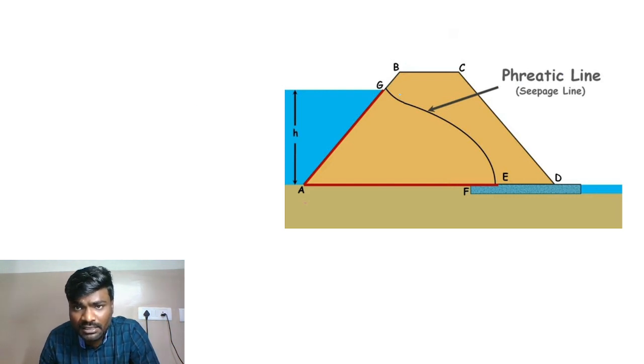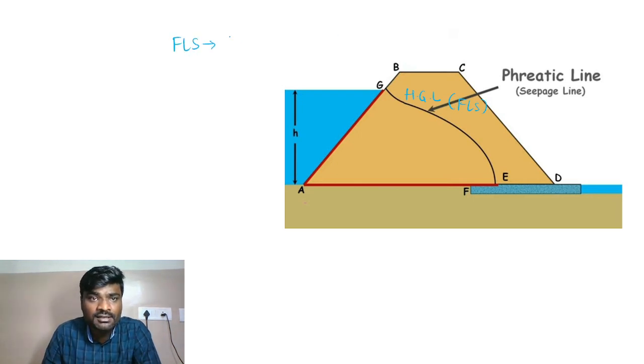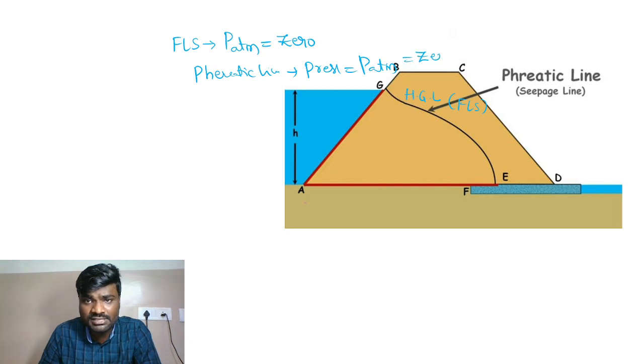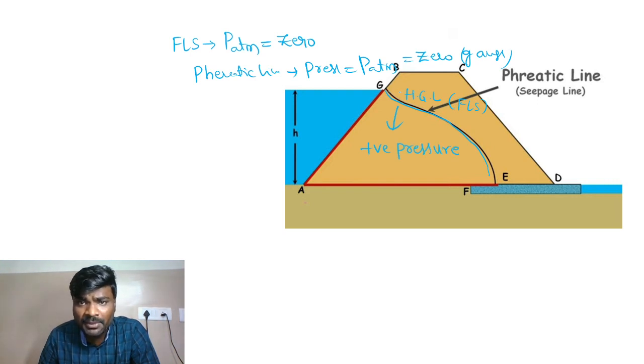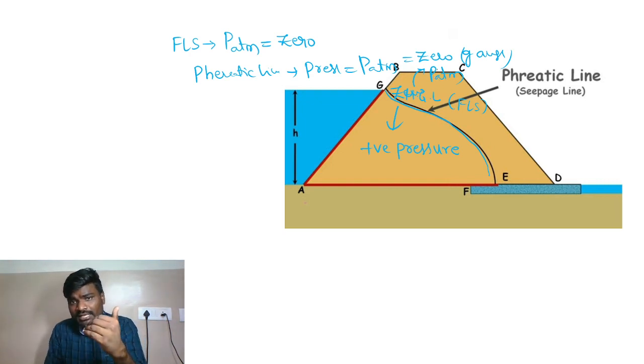So this phreatic line is the topmost flow line and it divides the saturated and unsaturated soil zones. If you observe the phreatic line, it equals the hydraulic gradient line. There is a free liquid surface, and on this free liquid surface we have atmospheric pressure. So on the phreatic line, the pressure that exists is zero gauge pressure. If you observe just below this line, at the bottom portion, positive pressure exists. Above the line is atmospheric pressure.